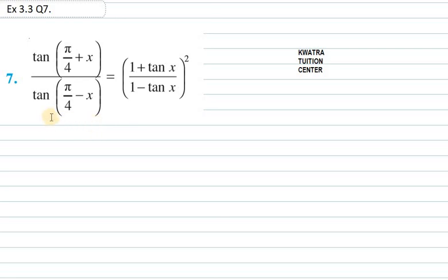Hello everyone, let's start with question number 7 of exercise 3.3. So here we are. We are given two sides, the left-hand side and the right-hand side. I will be reducing the left-hand side to make it equal to the right-hand side.